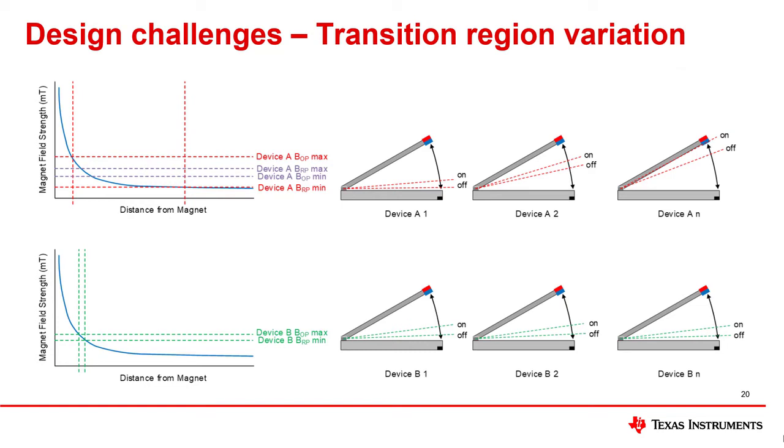As for device B, the BOP and BRP tolerance is too small to be distinguished on the graph. Consequently, every laptop with device B has nearly identical on and off transition points.